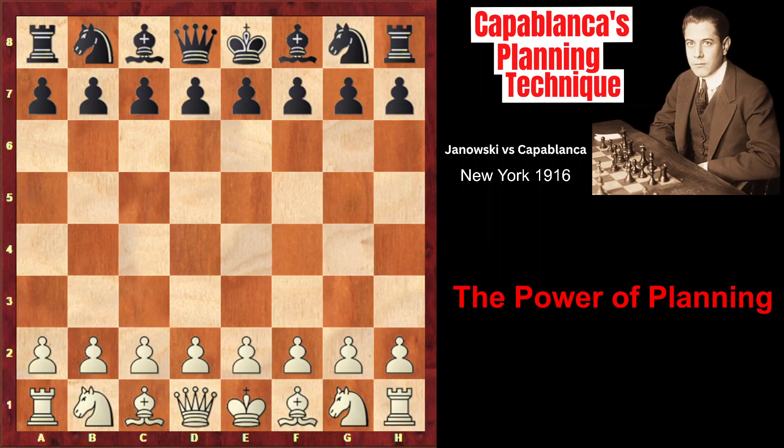Hello chess fans! In this game you'll be able to observe the power of planning and piece development in accordance with this plan. Capablanca makes a plan right in the opening and even violates the basic opening principles in order to implement his plan, while his opponent, David Janowski, just develops the pieces in accordance with the opening principles, but without really having a plan. And you will see the difference between these two approaches.